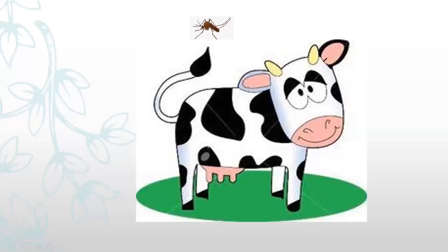Our next animal is a cow. The cow uses its tail to chase away or sway away insects.